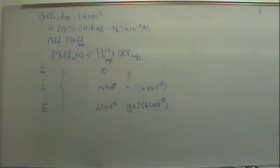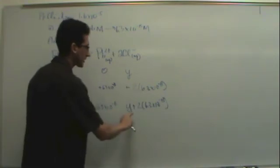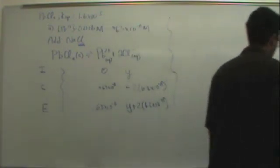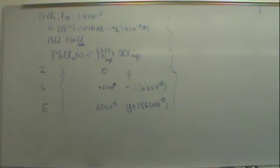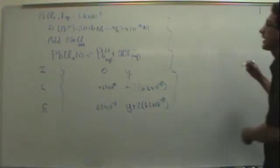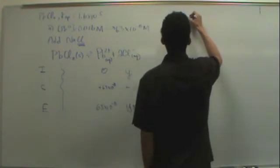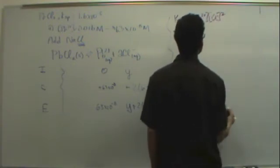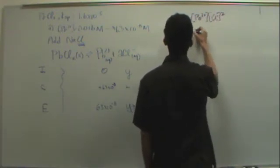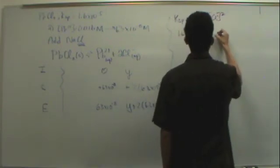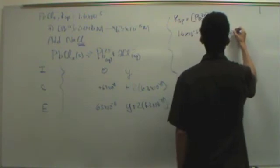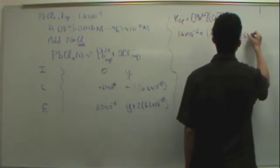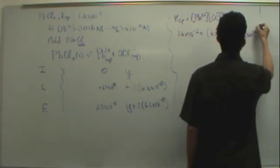They're giving us X. Normally you go plus X plus 2X. This would be X, and this would be the common ion plus 2X. You'd say Ksp equals lead 2+ times Cl minus squared. We know that's 1.6 times 10 to the minus 5. Lead is 6.3 times 10 to the minus 8, and the chlorine is Y plus 2 times 6.3 times 10 to the minus 8, and that's squared.